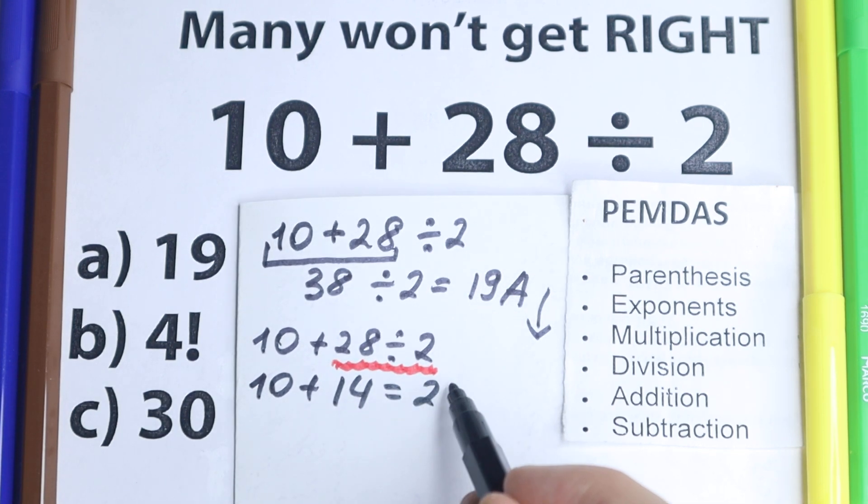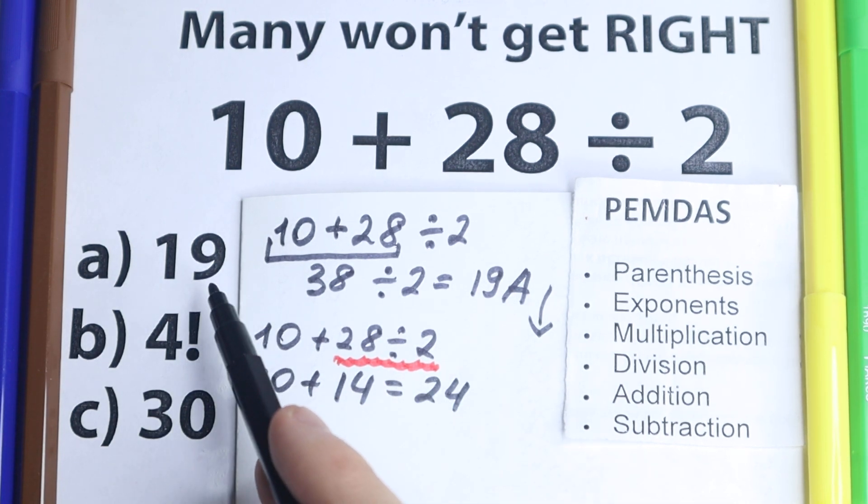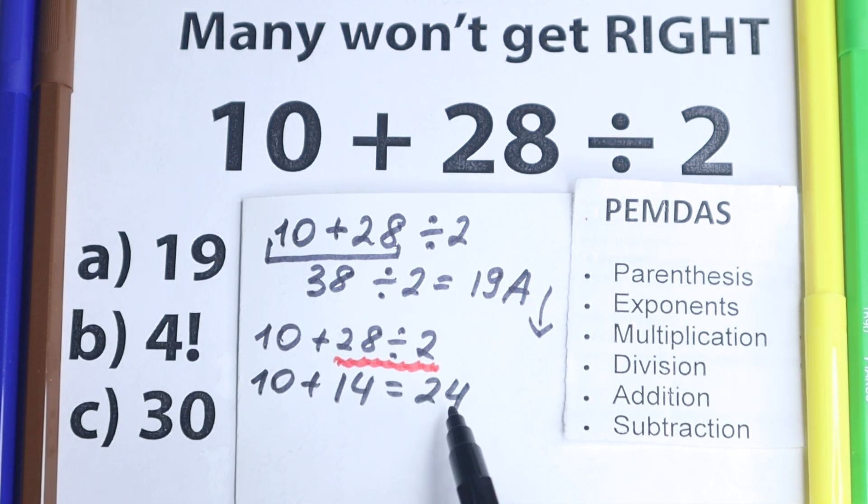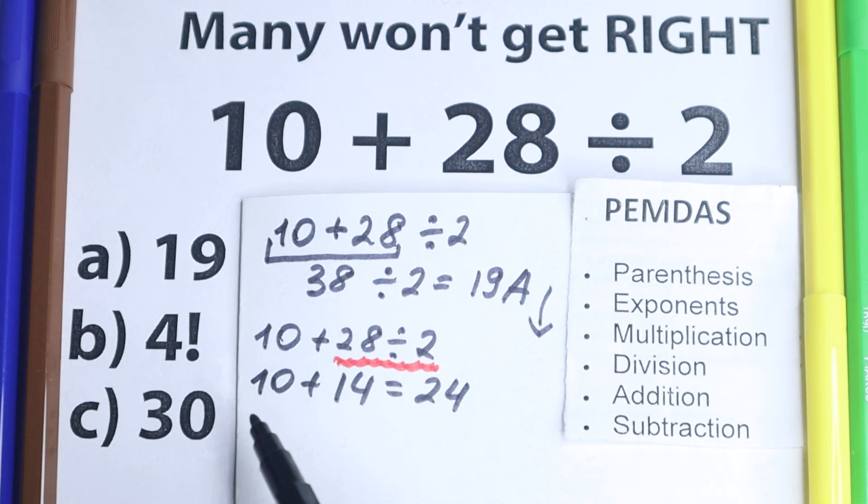So it looks like 24 is a correct answer. But if you look to the options right here, we have 19. This is not equal to 24. We have option C is not the same as 24.